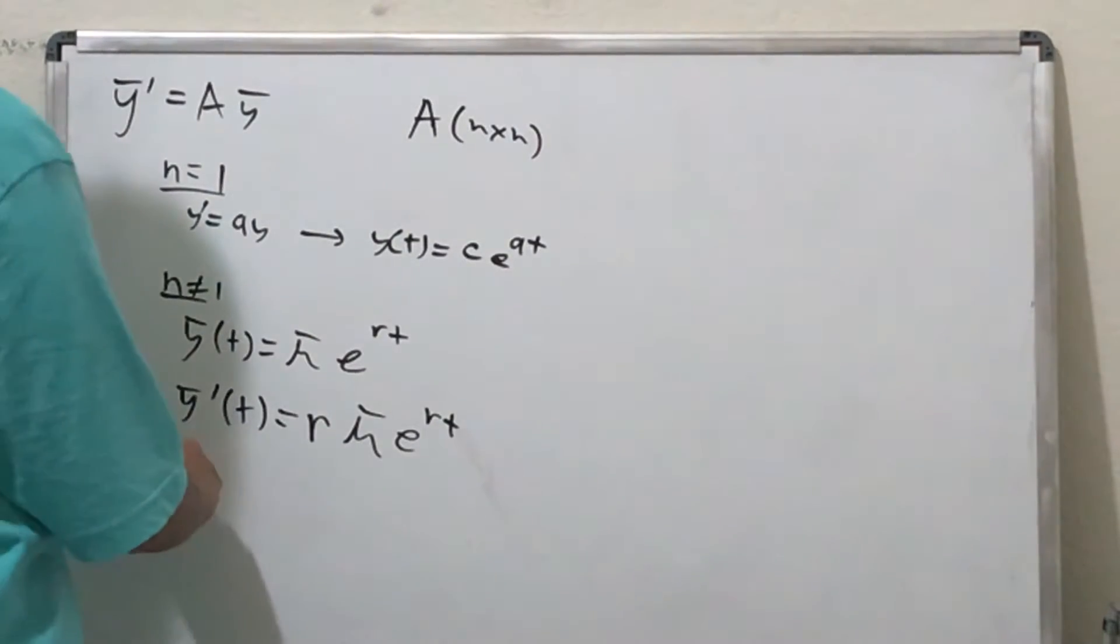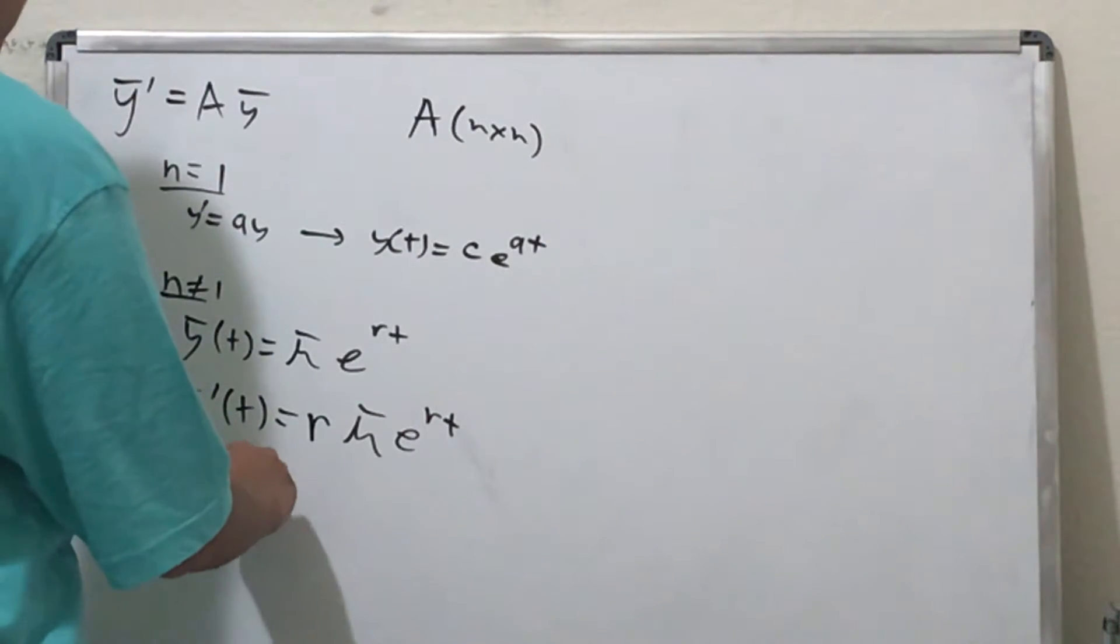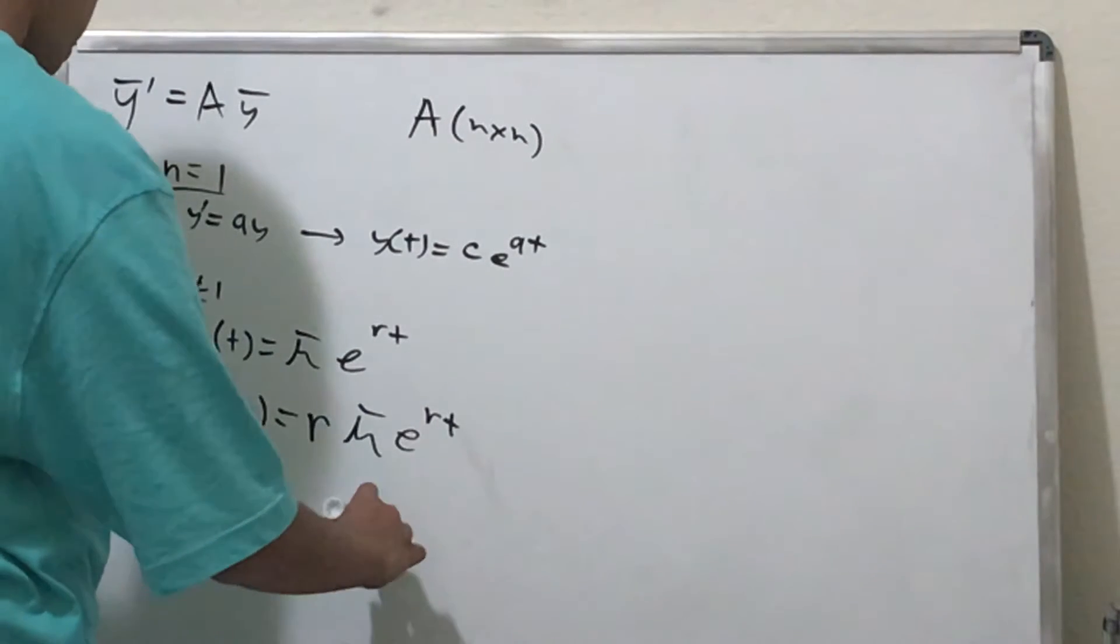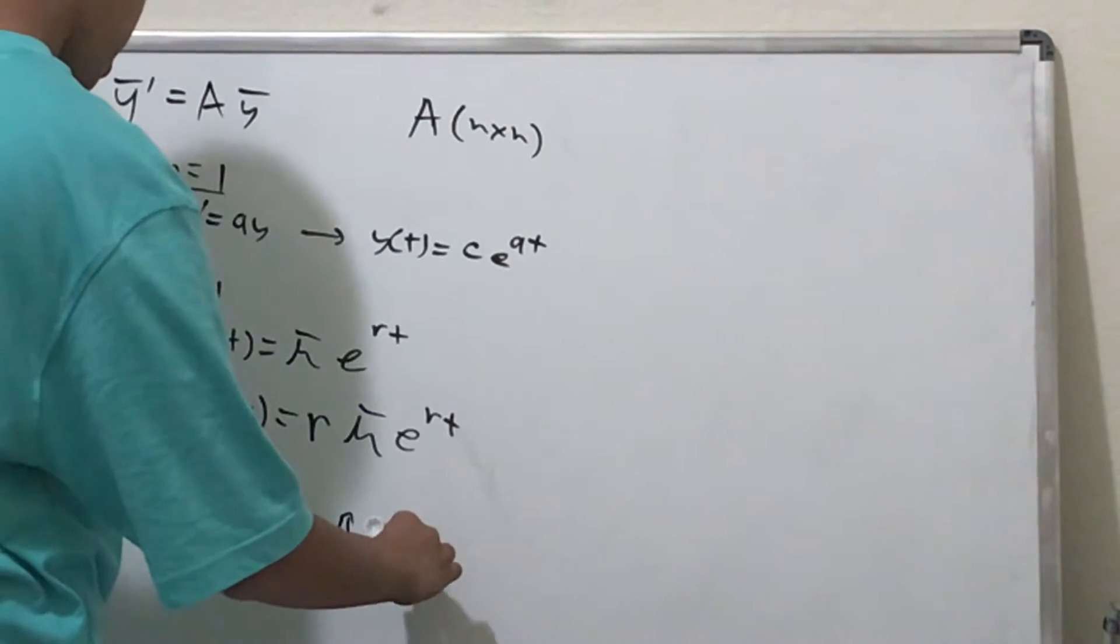So we get y' = Ay, so this means that y', which is rμe^(rt), is going to equal Ay, and then Ay is going to be Aμe^(rt) like that.